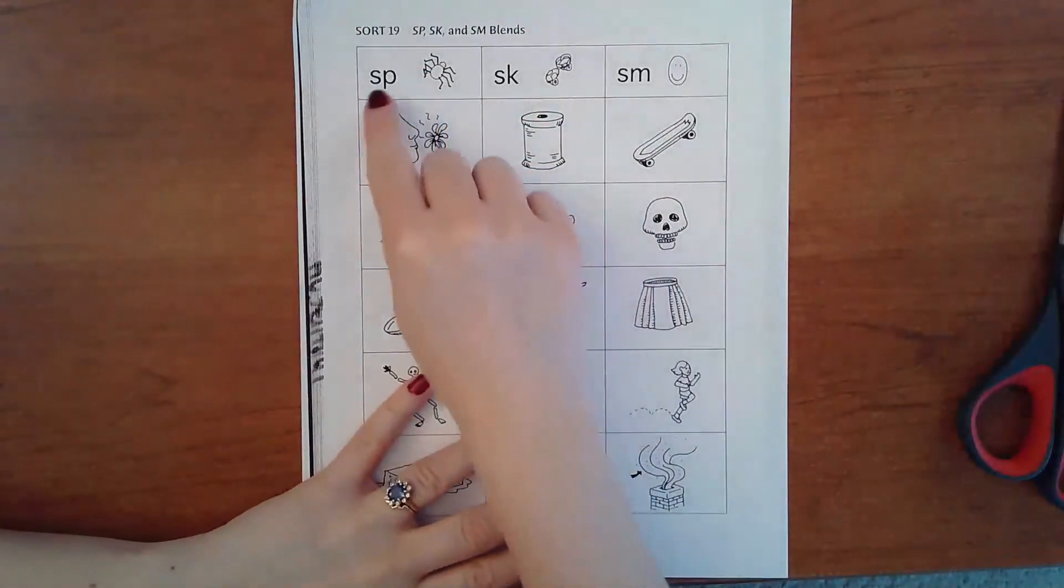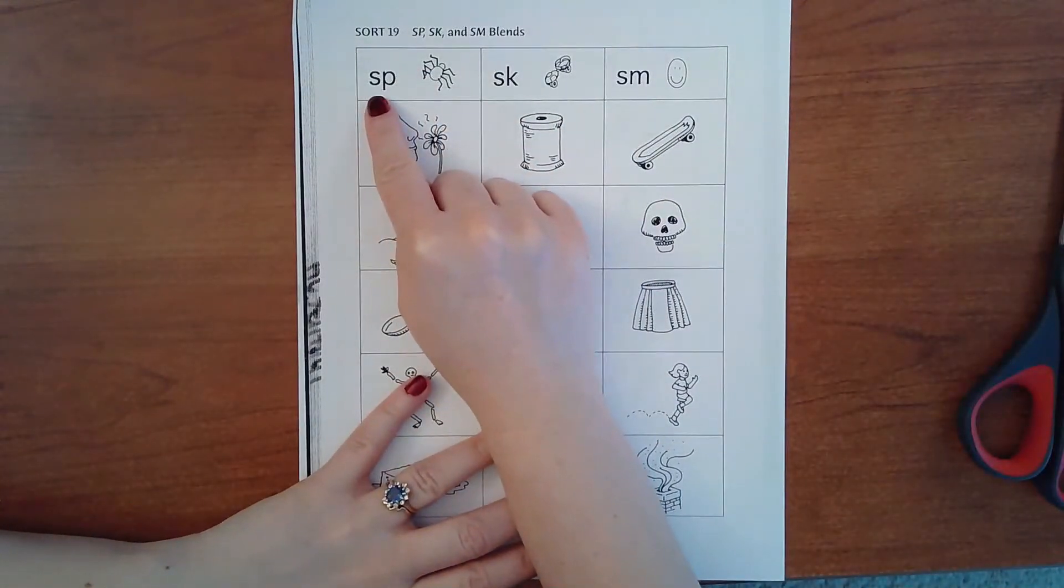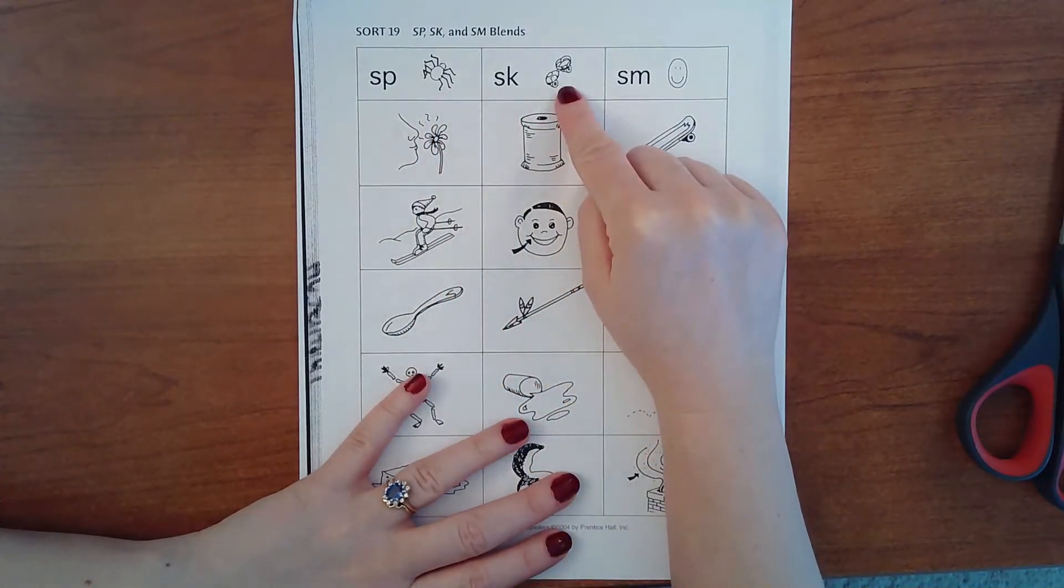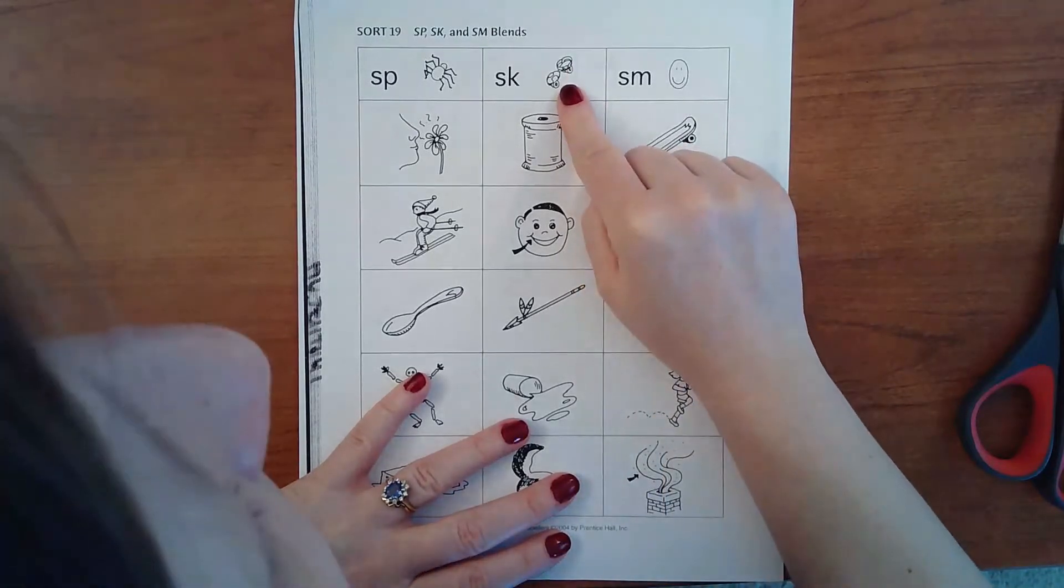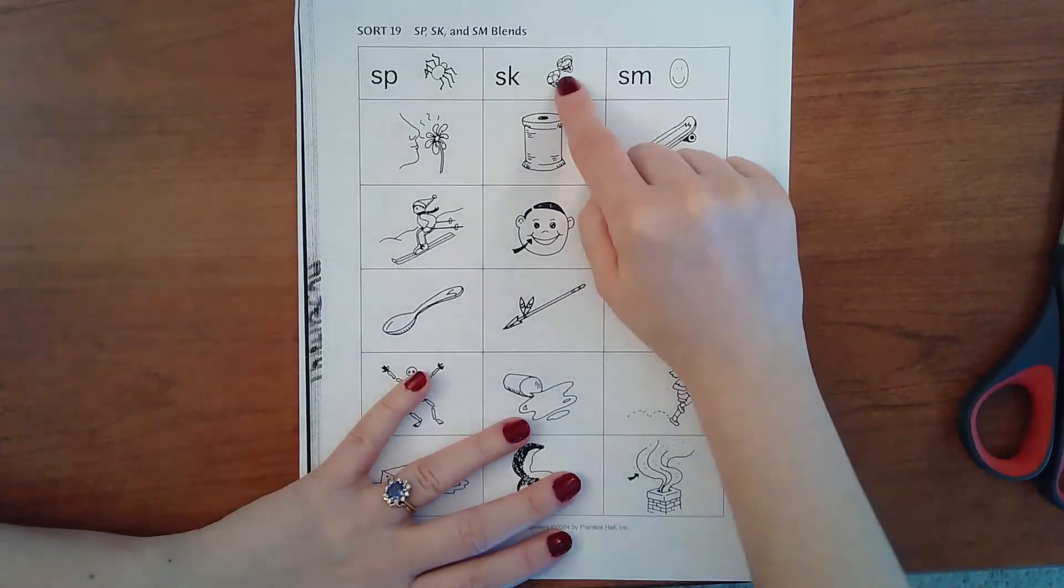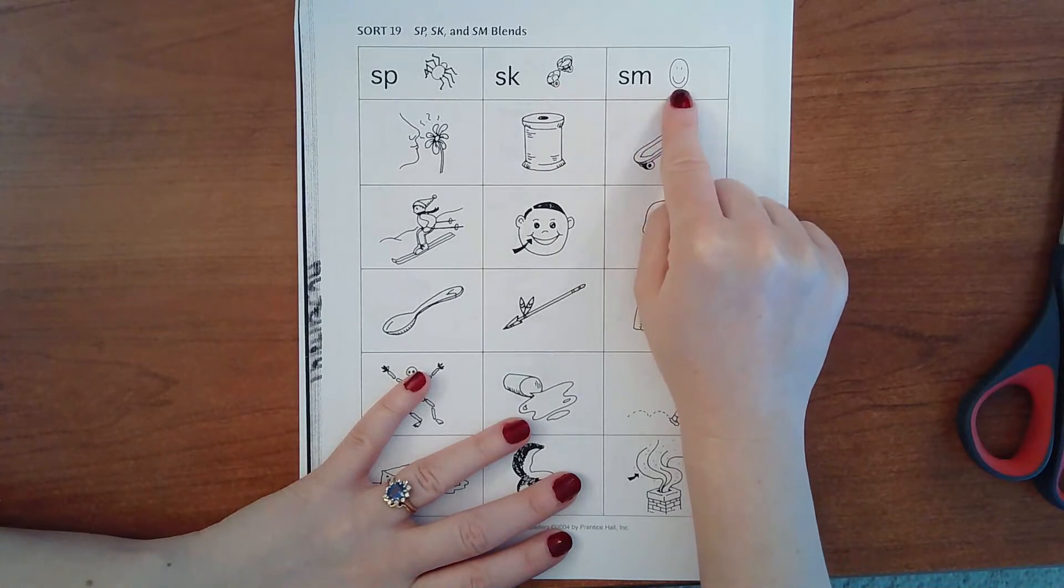So this week's sort we have SP, SP like in spider. SK, SK—I could not figure out what that was at first. I was like, what are those, earrings or buttons? It's a skate. It's supposed to be a skate, but it doesn't really look like a skate, but that's I think what it's supposed to be. And SM, SM like in smile.